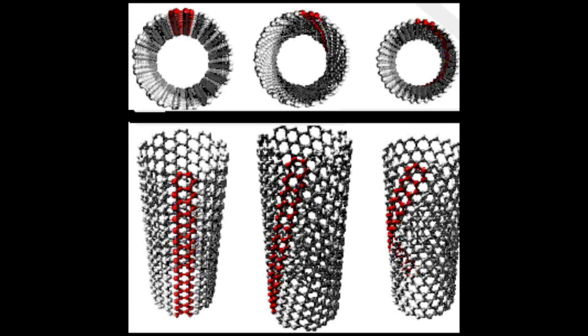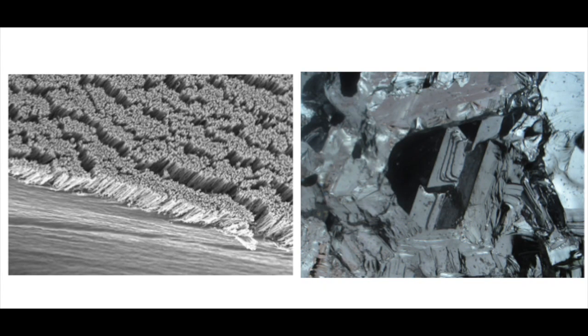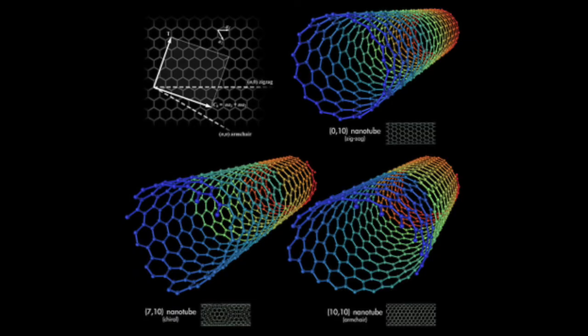For semiconducting carbon nanotubes, the band gap for a 1 nanometer diameter comes out to be about 0.7 to 0.9 electron volts. For comparison, the band gap of silicon is about 1.1 electron volts. This smaller band gap means that carbon nanotubes can act more efficiently than silicon, while still being a semiconductor.